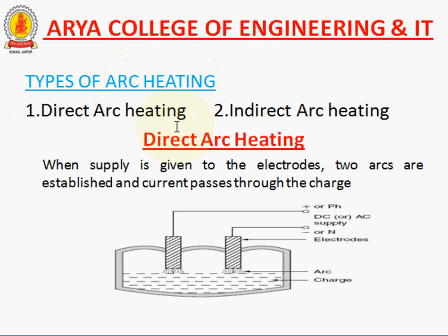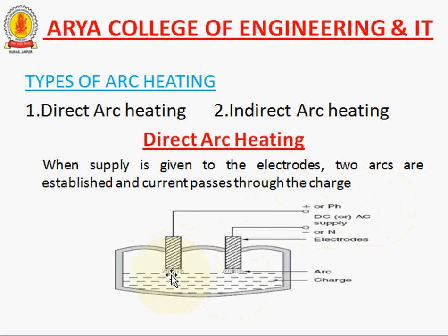Now we are going to direct arc heating. This is the diagram of direct arc heating. In this diagram, two electrodes are connected to the supply, and there is the charge. The arc is produced between the charge and the electrodes. When supply is given to the electrodes by the help of wire, the arc is produced due to the current, and this arc flows to the charge and the heat becomes very fast. So this is a very simple method to heat any material.